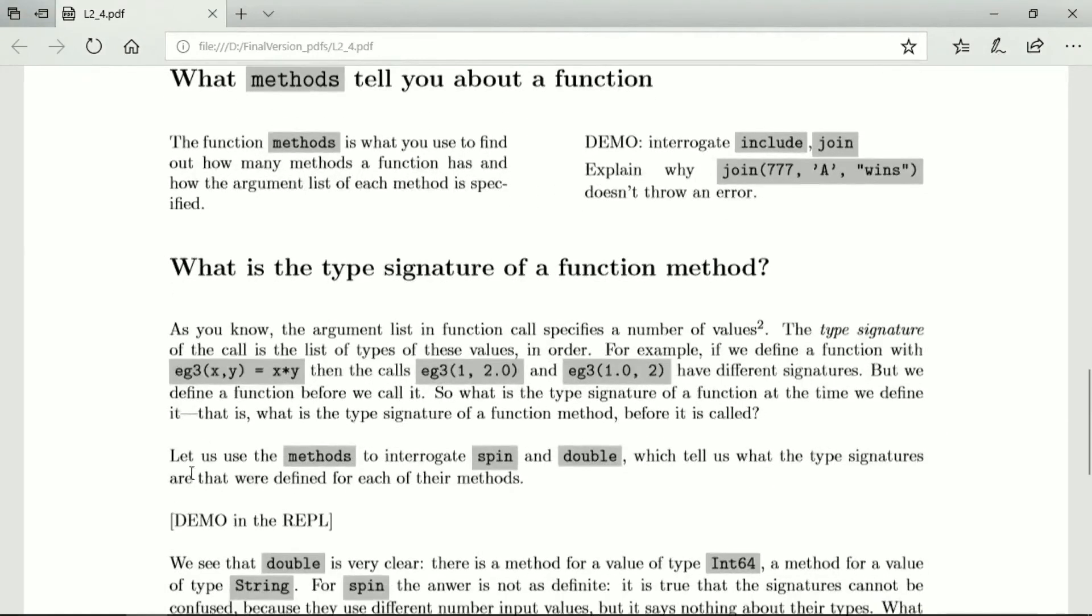So what do we mean then by the type signature of a method? We have that the argument list of a function call defines some values. If we have the type signature of the list of types of the values, this is of the function call. So here we have two values, the first is int64, the second is float64. And here we have the first is float64, and the second is int64. So these two actually have different signatures.